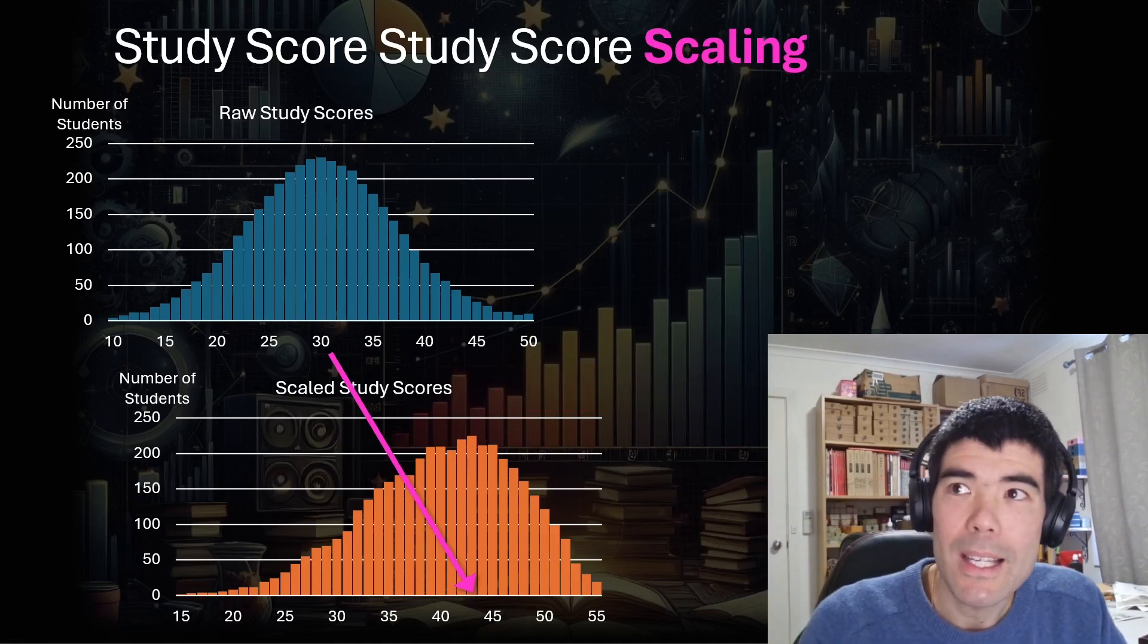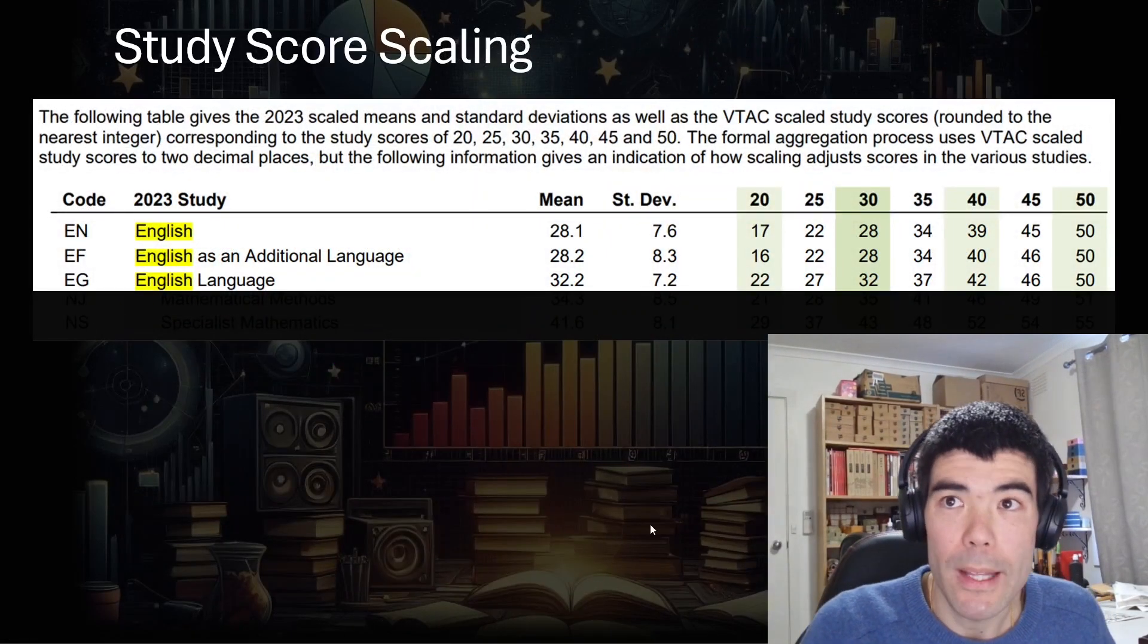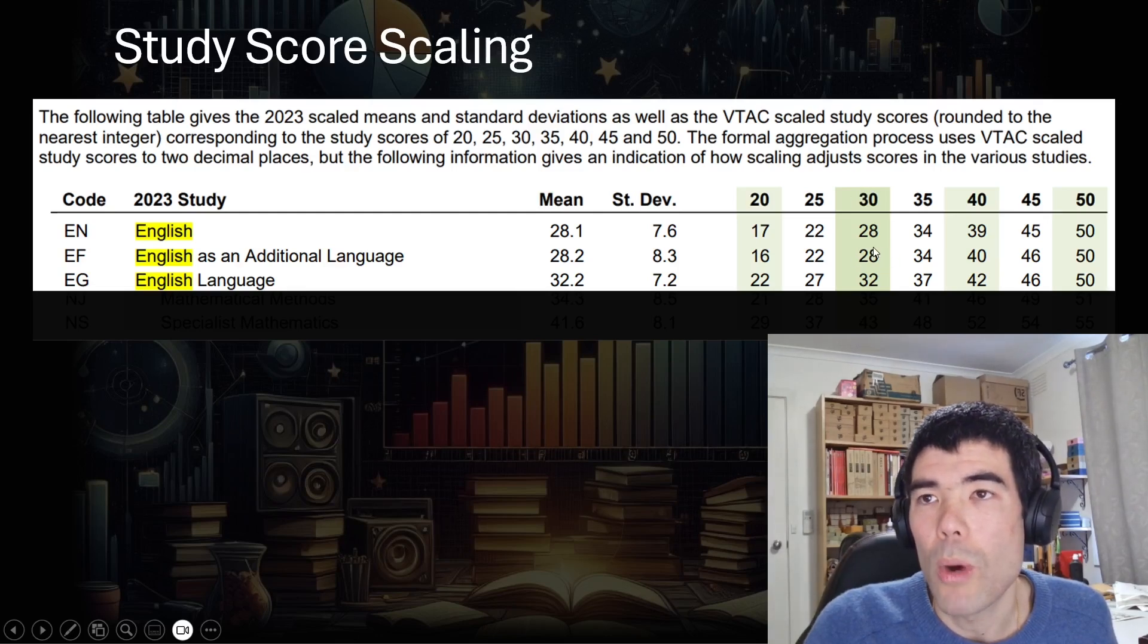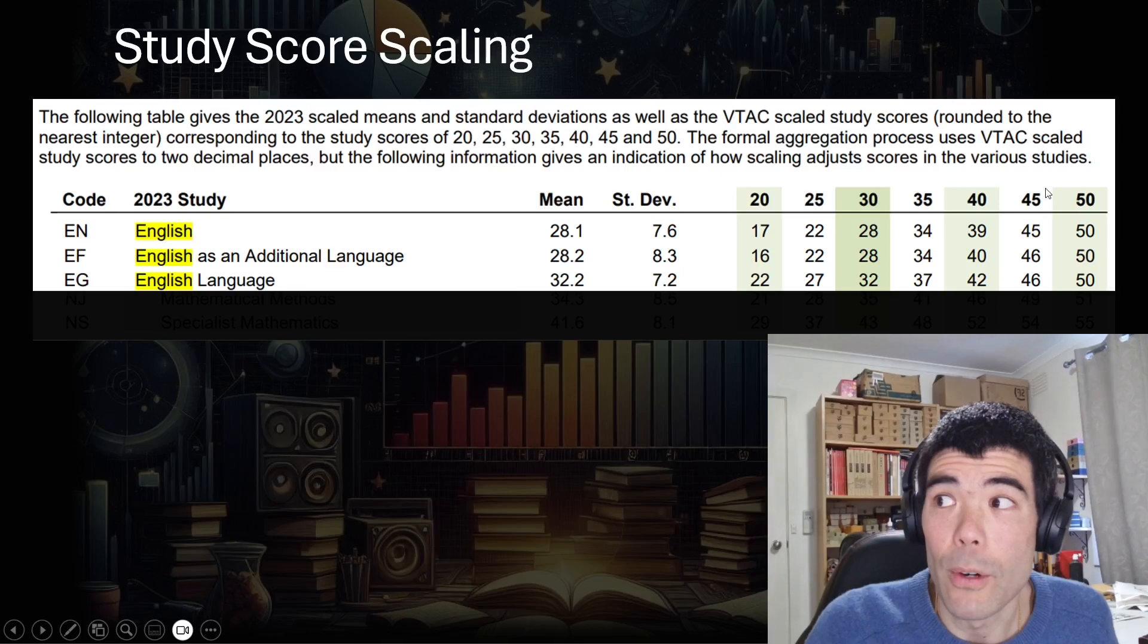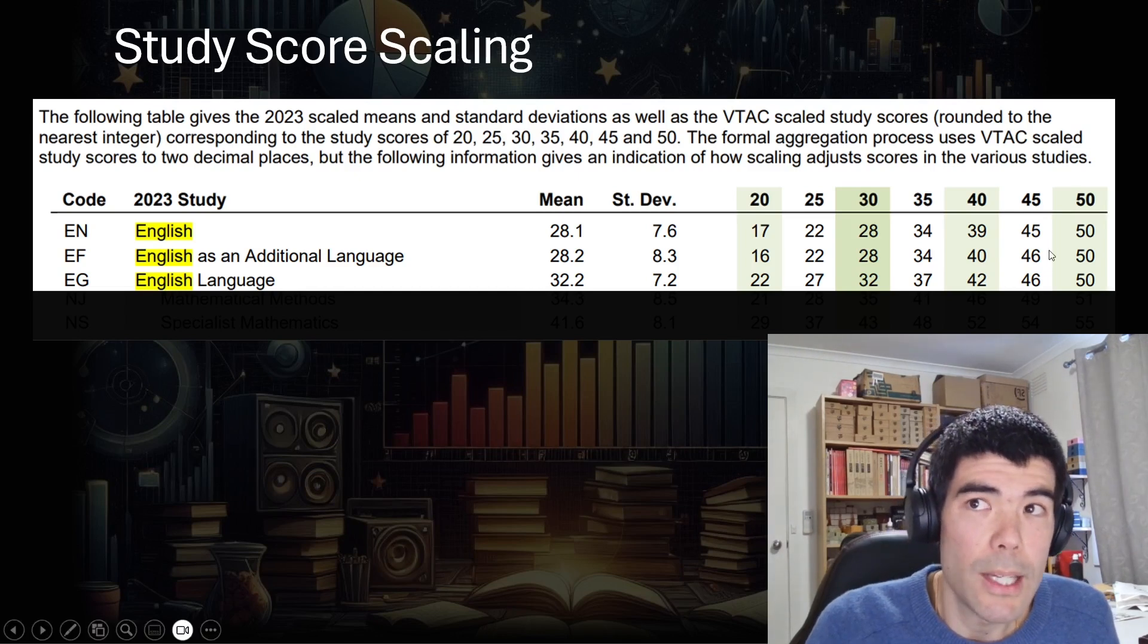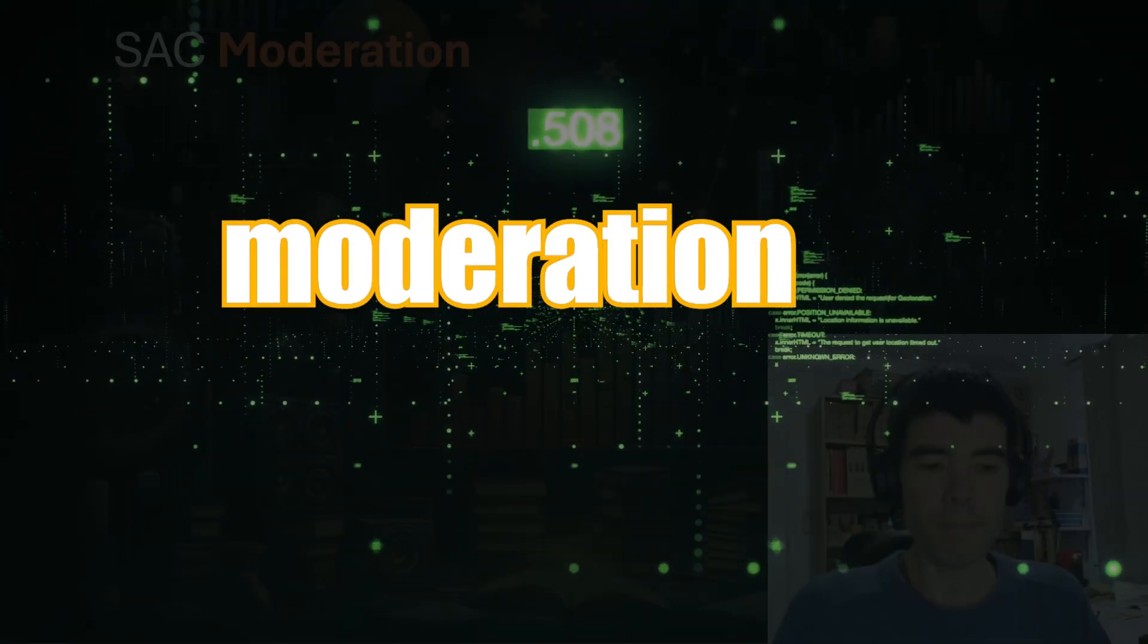So if we go back to the English example for a minute and talk about the EAL again, so 35 has gone down to 34, 30 has gone down to 28. So those students who've scored 30 in EAL tended not to do quite as well in other subjects, whereas the students who've scored 45 in EAL, they've actually done better than that in other subjects. So it's quite interesting how that works. But by looking at different cohorts of students, the VTAC can actually scale each group fairly.